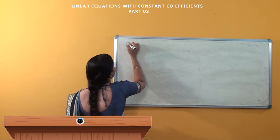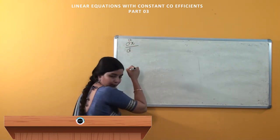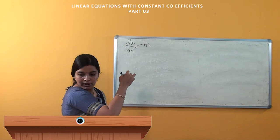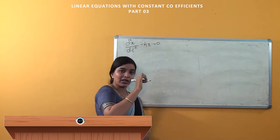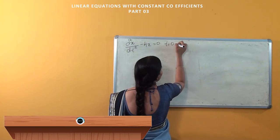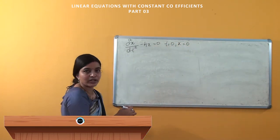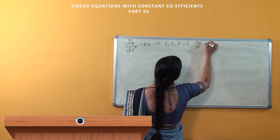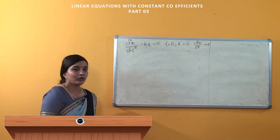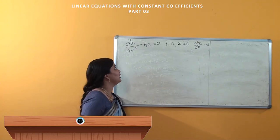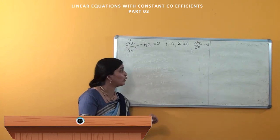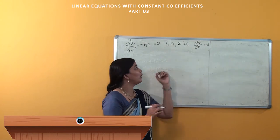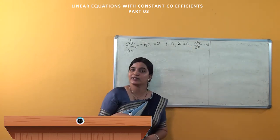Now we will solve one problem. Given: solve d²x/dt² - 4x = 0, with the conditions that at t = 0, x = 0, and dx/dt = 3.